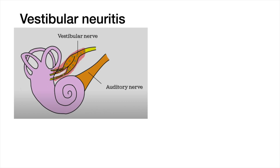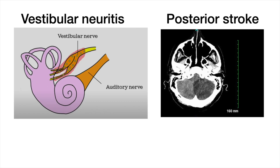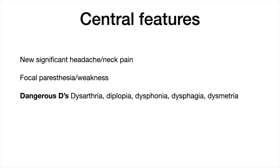Now the question is, does she have vestibular neuritis, which is more likely, or is she having a posterior circulation stroke, which is less likely? The next step is to screen the patient for central features which would not be seen in vestibular neuritis, such as new significant headache or new neck pain, concerning for cerebral hemorrhage or vertebral artery dissection, and typical stroke symptoms such as focal paresthesias or weakness, and then the posterior circulation symptoms — the so-called dangerous D's: dysarthria, diplopia, dysphonia, dysphagia, and dysmetria.